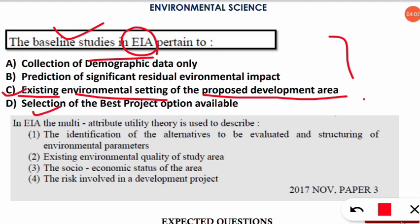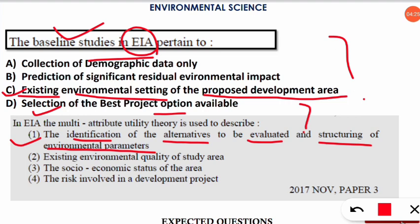The next question is: in EIA, the multi-attribute utility theory is used to describe what? The correct option is option number one — multi-attribute utility theory describes the identification of alternatives to be evaluated and the structuring of environmental parameters. These questions are taken from previous NET papers.